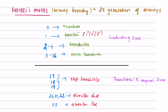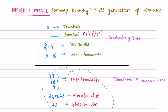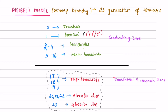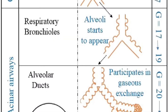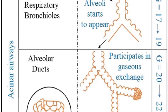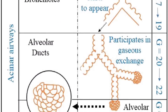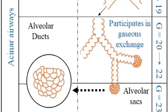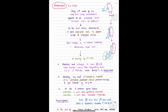Generations 17, 18, and 19 are respiratory bronchioles. Generations 20, 21, and 22 are alveolar ducts, and generation 23 is the alveolar sac. These zones are known as the transitional and respiratory zone because they play a role in gas exchange. Now let us discuss each stage separately.